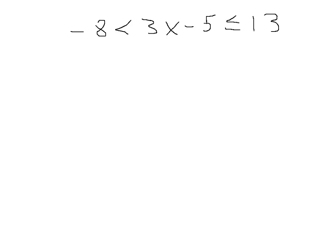Okay, and we'll have this be our last example. And this is written a little bit differently, but the and is implied here. So remember what this means: 3x minus 5 is greater than minus 8 and less than or equal to 13.